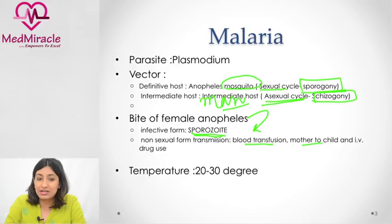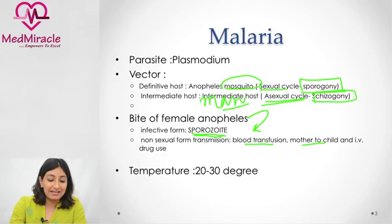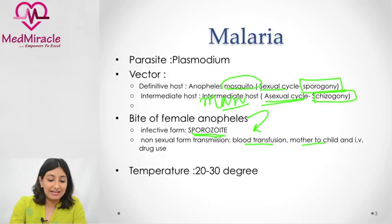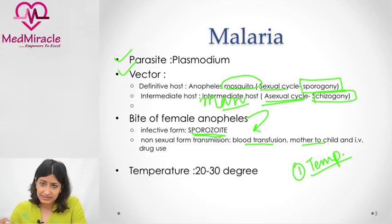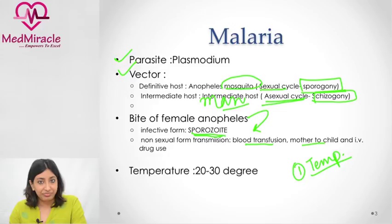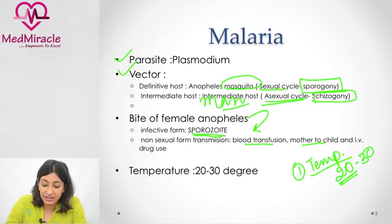Important environmental factors for the parasite and vector: First is temperature. The temperature needs to be suitable both for the vector and for the parasite to build up inside the vector. The temperature suitable for Plasmodium to grow is 20 to 30 degrees Celsius — less than 20 degrees is not conducive, and above 30 degrees it generally doesn't grow.